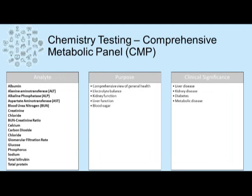The comprehensive metabolic panel, or CMP, gives a very comprehensive view of a patient's general health. Tests on a CMP include albumin, alanine aminotransferase, alkaline phosphatase, aspartate aminotransferase, blood urea nitrogen, creatinine, chloride, the BUN-creatinine ratio, calcium, carbon dioxide, GFR, glucose, phosphorus, sodium, total bilirubin, and total protein. Based on the results of a comprehensive metabolic panel, a practitioner will know which direction to take their diagnosis and get a better holistic view of a patient's health. That concludes our presentation on the clinical chemistry department; we will pick this back up with part five of our six-part series.